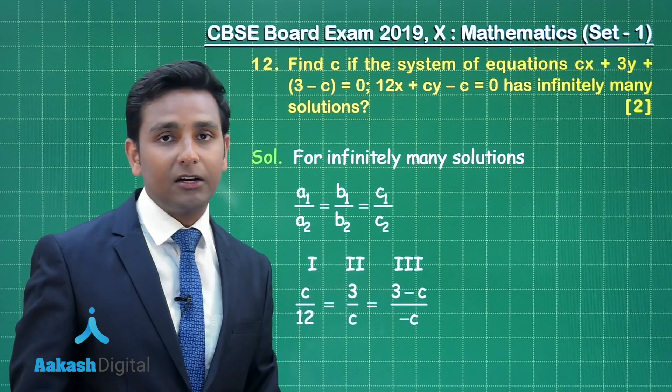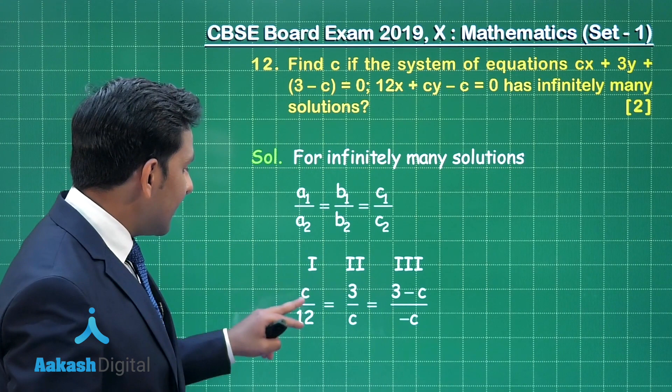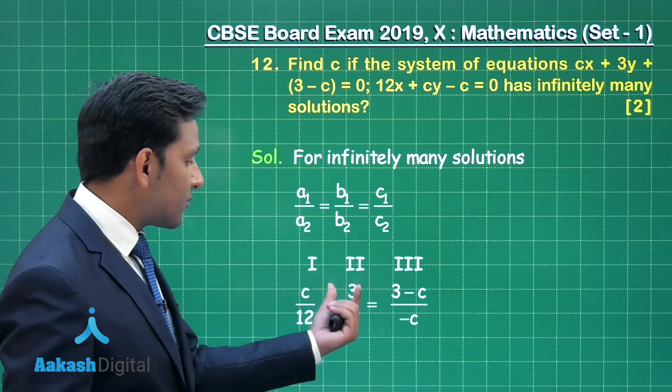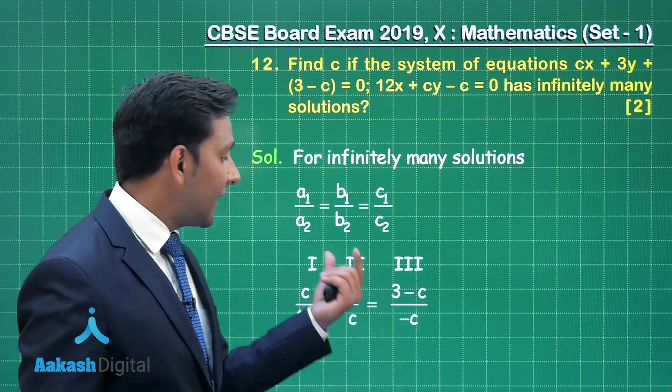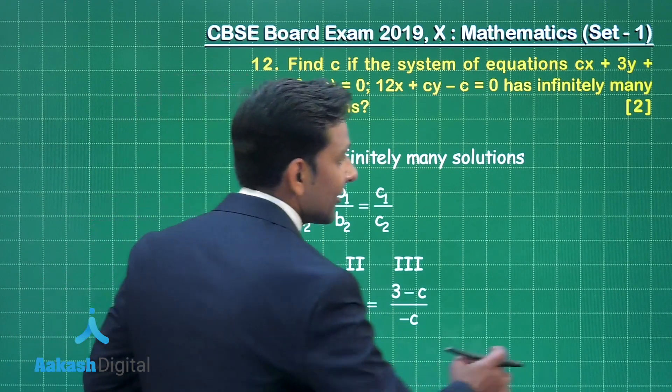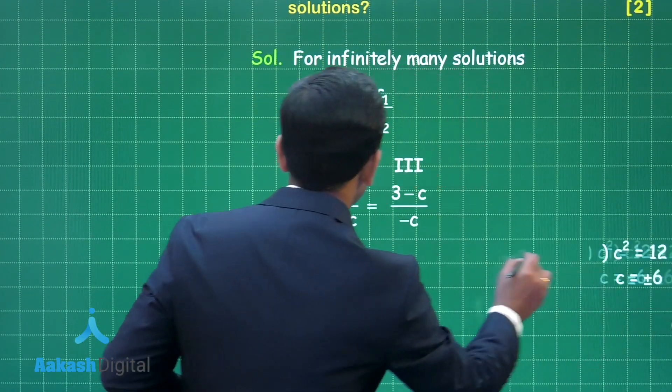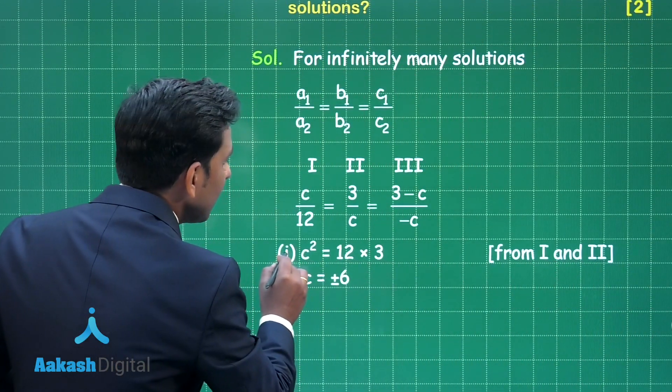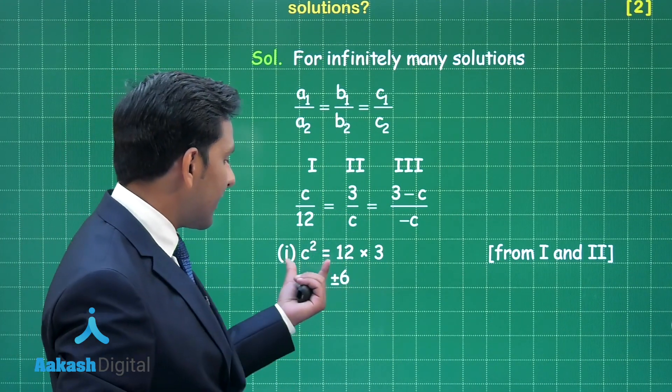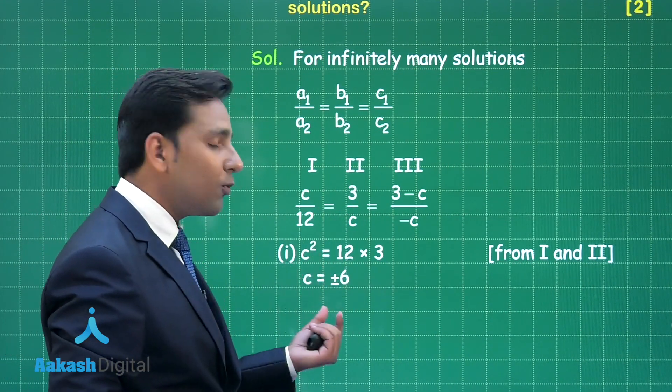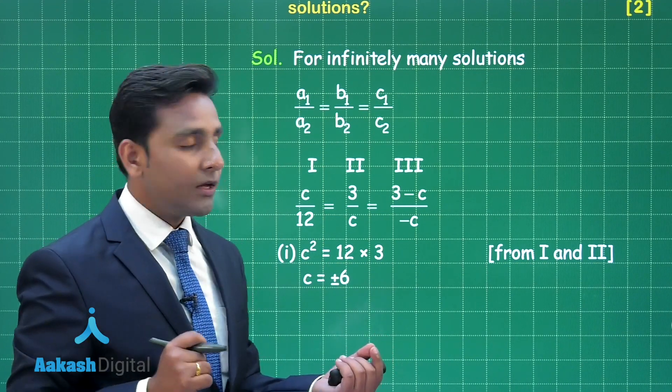If I consider this ratio as first, this one as second, and this one as third, taking first and second into the consideration, that means we are taking C upon 12 is equal to 3 upon C. After further simplification we are getting the value of C equal to plus minus 6.